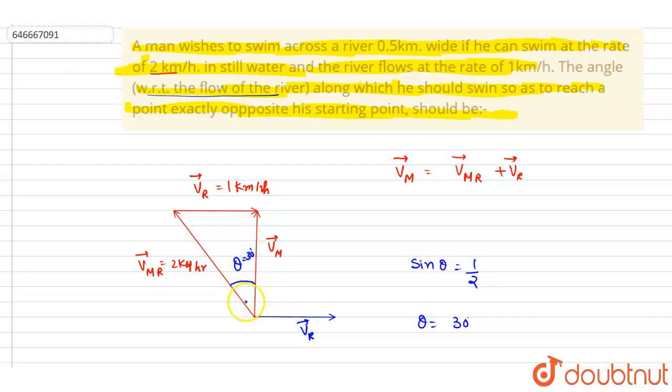So if you see, the man's velocity should be at an angle of 120 degrees to the river, and this will be the answer of this question. Thank you.